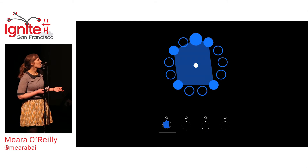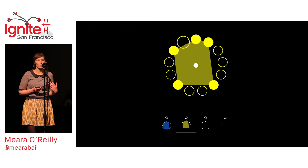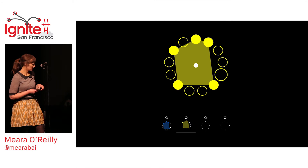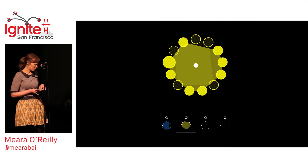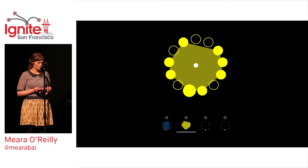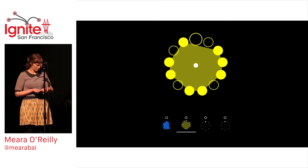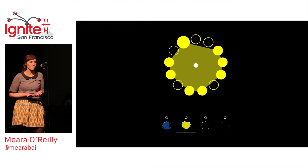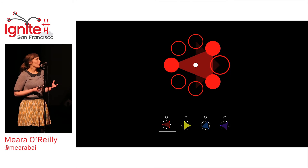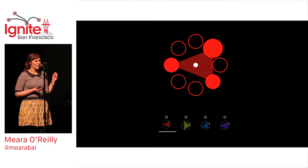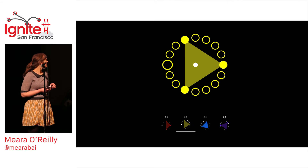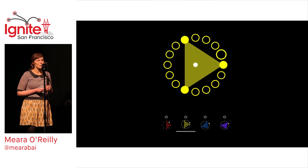If you make a copy of a necklace and then invert it, you can create an instant polyrhythm. The shadow of a rhythm is found by placing a beat at the midpoint between other beats. This one's really fun.